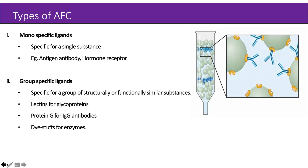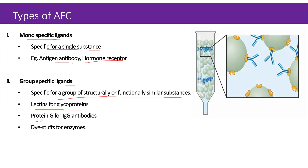Now let us see the different types of affinity chromatography based on the types of ligands used. The chromatography can use monospecific ligands, which are specific for a single substance — for example, antigen for antibody or hormone receptor. Alternatively, we can use group specific ligands, which are specific for a group of structurally or functionally similar substances, like lectins for glycoproteins, protein G for IgG antibodies, and diastase for enzymes.